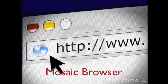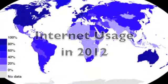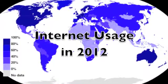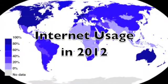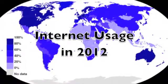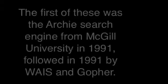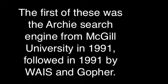Even before the World Wide Web, there were search engines that attempted to organize the Internet. The first of these was the Archie search engine from McGill University in 1991, followed in 1991 by WAIS and Gopher.